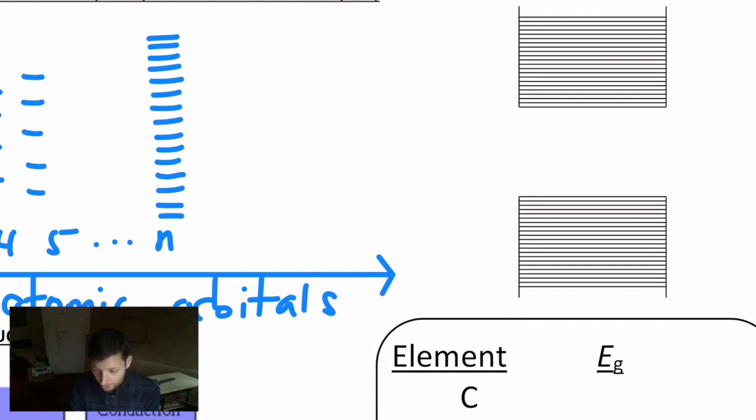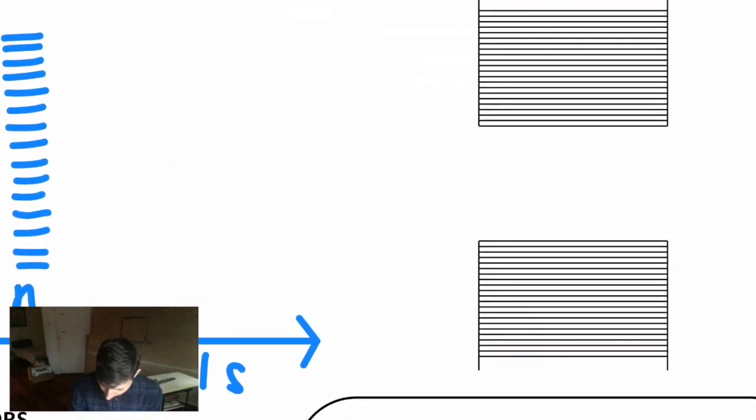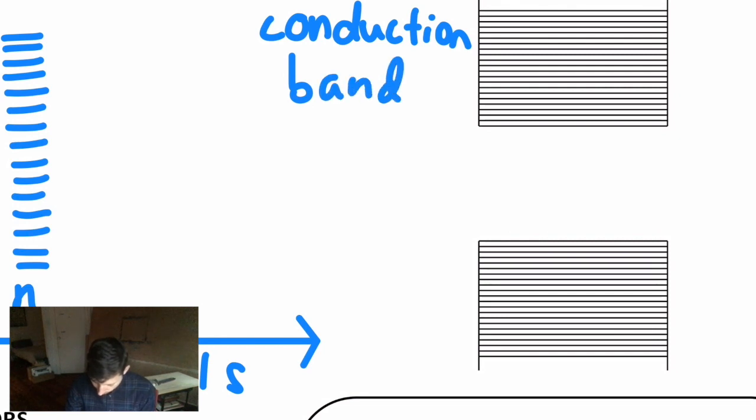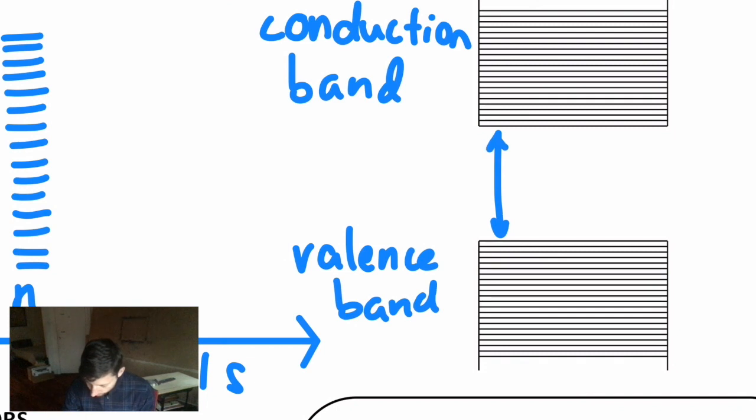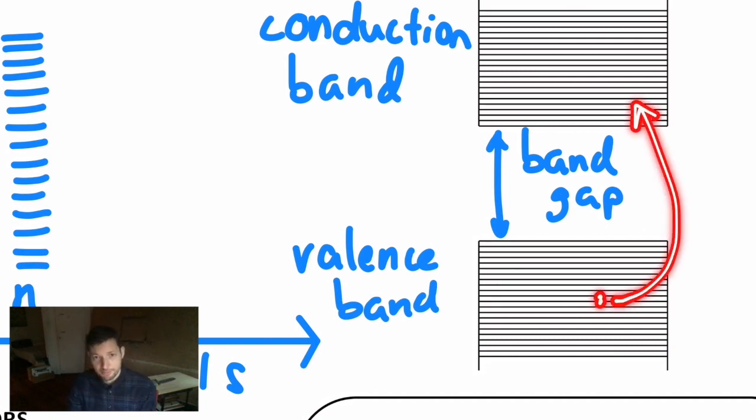The upper part is called the conduction band. And the lower part is called the valence band. But the most important part is actually that space in between. This is called the band gap. And in order to get conduction, we need to be able to promote an electron from the valence band to the conduction band. It needs to be able to cross that band gap. And sometimes just visible light is enough energy to do that. It depends on what the element is.